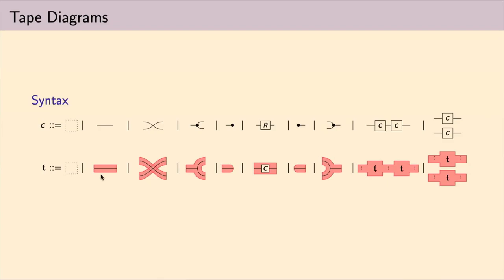We have, again, we can have the empty diagram or the identity, which is a single red tape with an identity line in it. Then they can cross. We have some sort of branching structure. And maybe the most important rule of this grammar is that inside of a tape, we can have this box with a C in it, which is representing a string diagram made out of the syntax above.